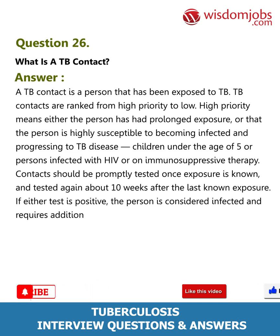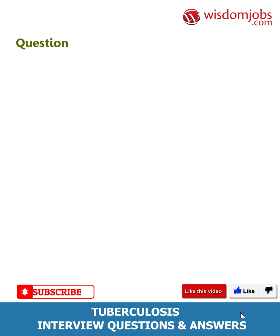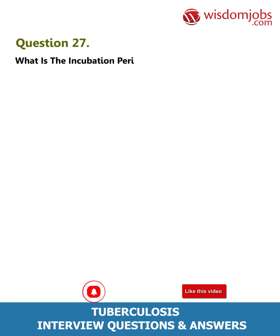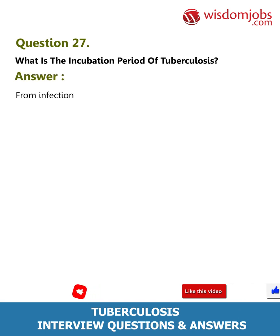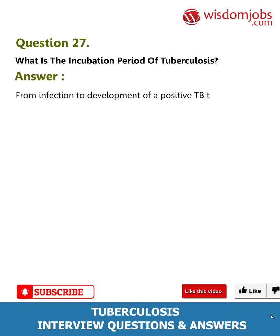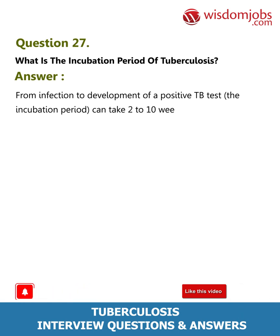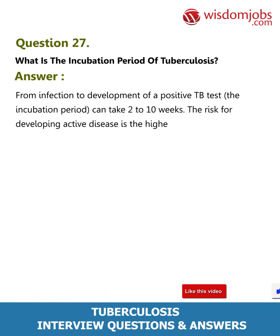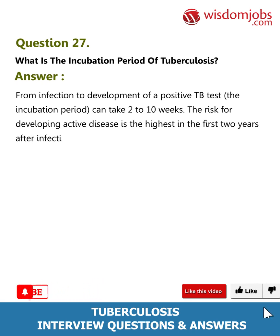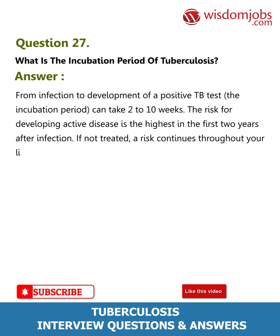Contacts should be tested again about 10 weeks after the last known exposure. If either test is positive, the person is considered infected and requires additional follow-up and treatment. Question 27: What is the incubation period of tuberculosis? Answer: From infection to development of a positive TB test, the incubation period can take 2 to 10 weeks. The risk for developing active disease is highest in the first two years after infection. If not treated, the risk continues throughout your lifetime.